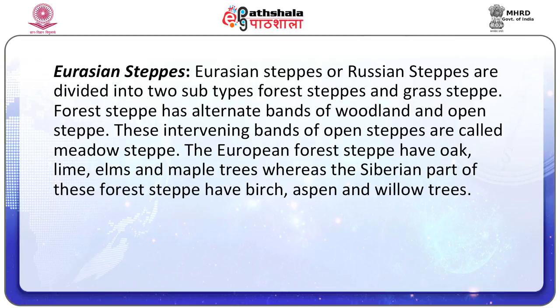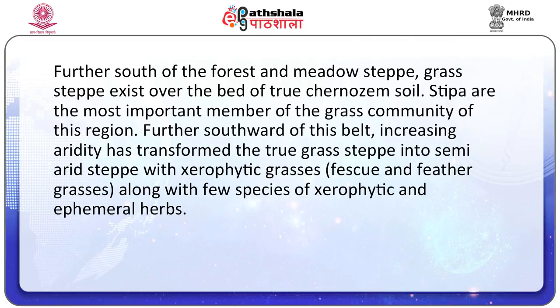Eurasian or Russian steppes are divided into two subtypes: forest steppes and grass steppes. Forest steppes have alternate bands of woodland and open steppes called mido steppes. European forest steppes have oak, lime, elms and maple trees, whereas the Siberian part has birch, aspen and willow trees. Further south, grass steppes exist over true Chernozem soil. Further southward, increasing aridity has transformed true grass steppes into semi-arid steppes with xerophytic grasses, fescue and feather grasses along with few species of xerophytic and ephemeral herbs.